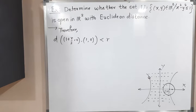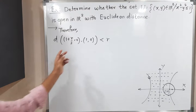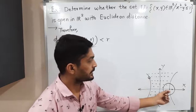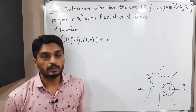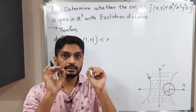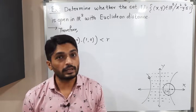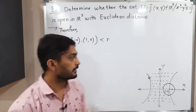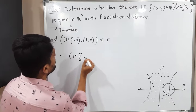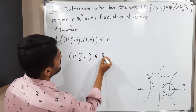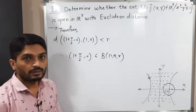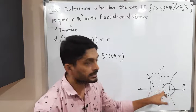Therefore, the distance from (1 + R/2, 0) to (1, 0) is R/2, which is less than R. Since any point whose distance from the center of the ball is less than the radius lies inside the ball, we conclude that (1 + R/2, 0) lies inside the open ball with center (1, 0) and radius R.